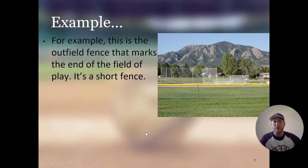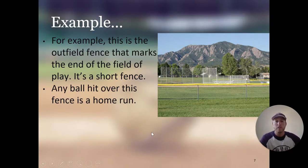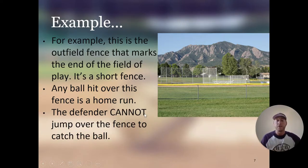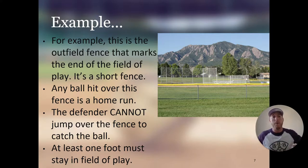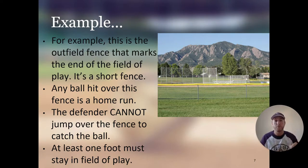For example, this is the outfield fence that marks the end of the field of play — it's a short fence, probably up to my chest. Any ball hit over this fence is a home run. That's the backstop behind home plate. A defender is not allowed to jump over the fence and catch the ball — they can't jump over the fence without their foot being in play and catch it. That's still a home run. At least one foot must stay in the field of play. In order to catch that ball and rob a home run, they would have to get their waist or belly up onto the fence and lean over — but they must keep at least one foot in the field of play for it to be an out. They can't just jump the fence and catch the ball — that doesn't count.